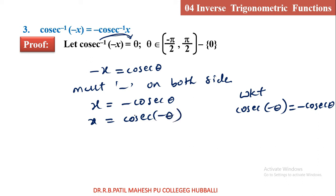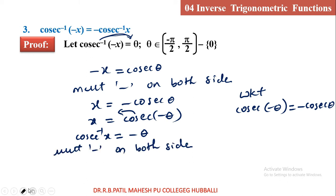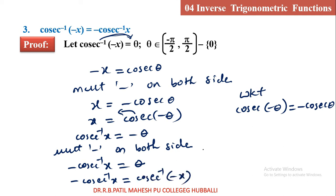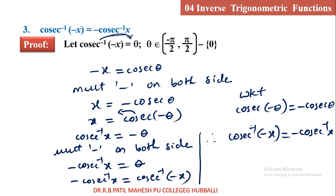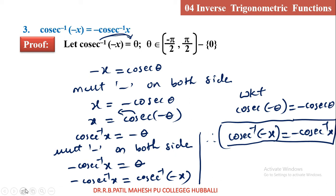Taking cosec to the left side: cosec inverse x is equal to minus theta. Multiplying minus on both sides: minus cosec inverse x is equal to plus theta. Replacing theta as cosec inverse of minus x, we prove that cosec inverse of minus x is equal to minus cosec inverse x. So we have proved all three basic properties of inverse trigonometric functions with negative values. Hope you will remember them — they are important for exams.